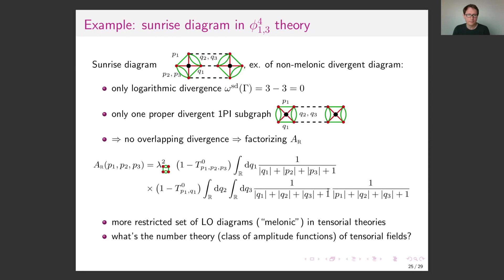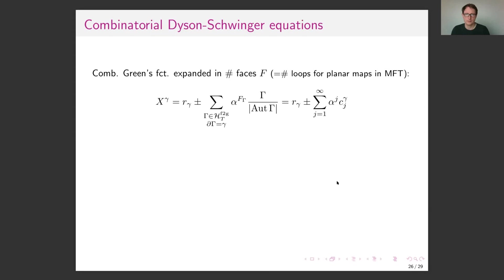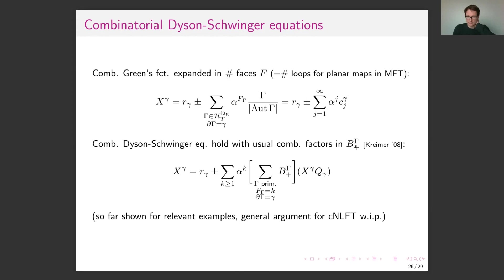Let me finish with some remarks on combinatorial Dyson-Schwinger equations — this is pretty much work in progress. The combinatorial Green's functions can be expanded in the number of faces, equivalent to the number of loops. The combinatorial Dyson-Schwinger equations make use of the B-plus operator. One can use the usual definition known from local field theory, with certain combinatorial factors accounting for all symmetries of how you insert diagrams into other diagrams, and simply derive the combinatorial Dyson-Schwinger equation. We have done this for relevant examples but I would also like a general proof for this very general setting of combinatorial non-local interactions.